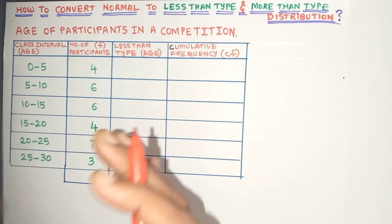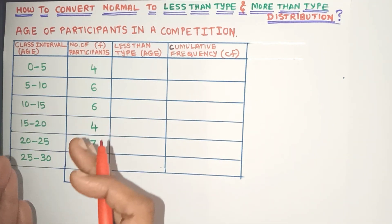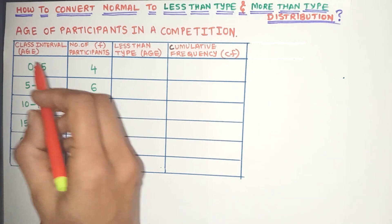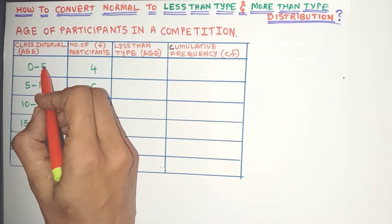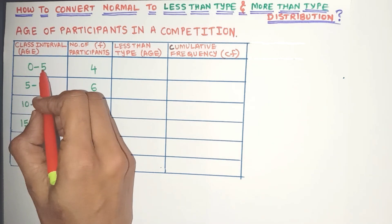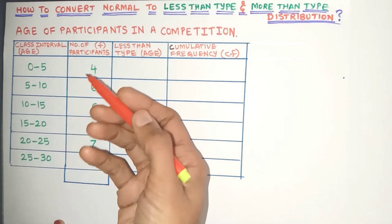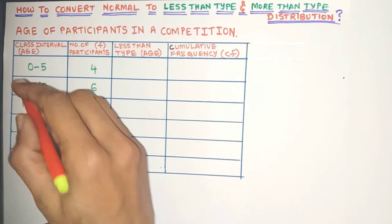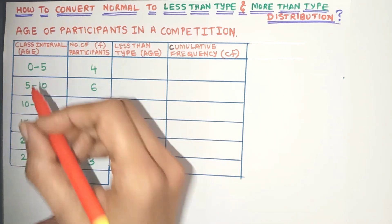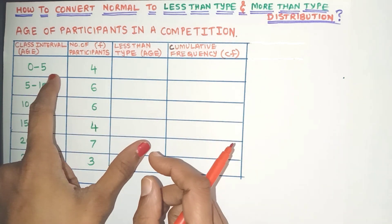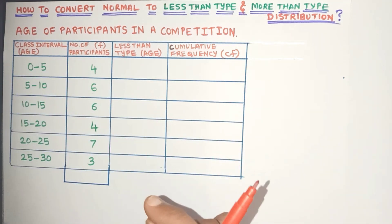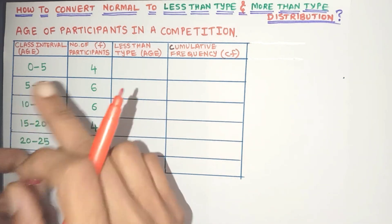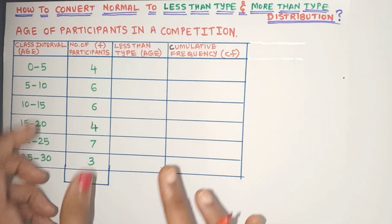These are the class intervals. Are they exclusive or inclusive? Yes, they are exclusive because the upper limit of a class interval and the lower limit of the next class interval are one and the same — there is no gap. So in exclusive class intervals, the upper limit is always excluded from that class interval.